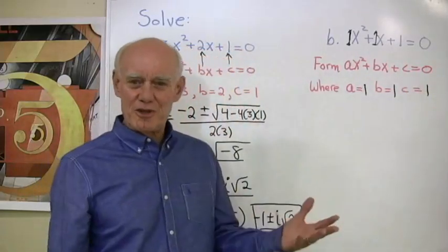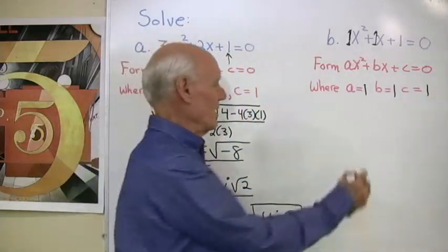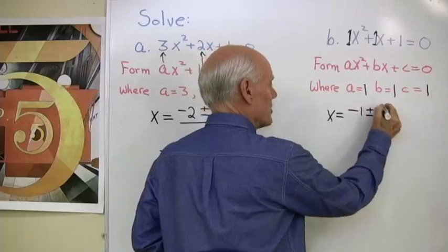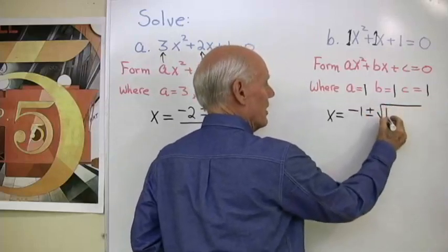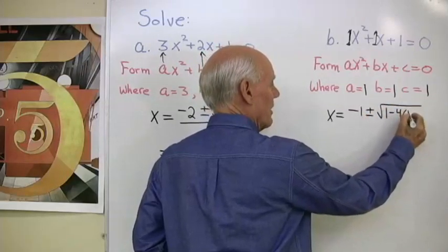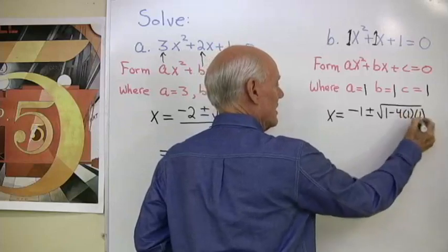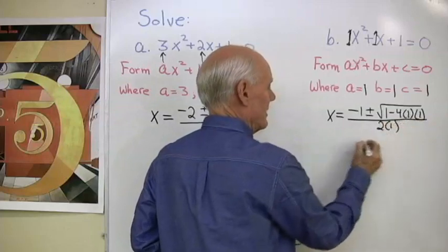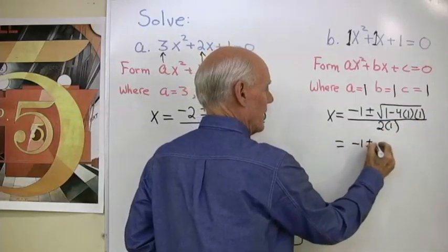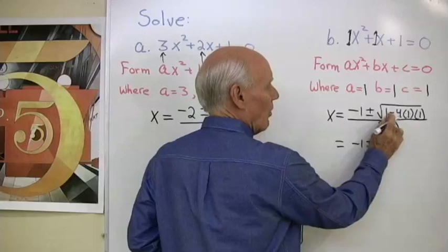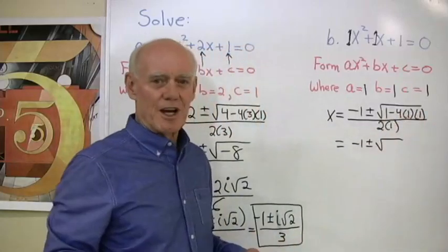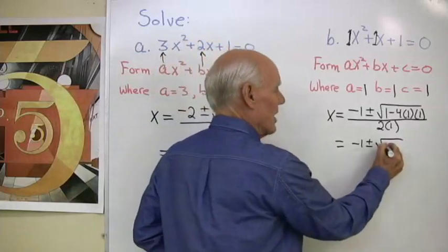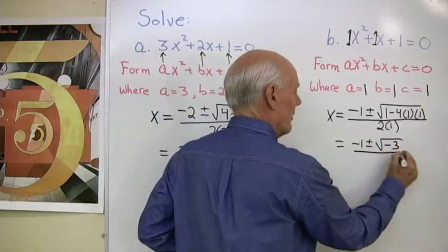So I'll substitute those numbers into my quadratic formula. I'll have x is negative B plus or minus square root B squared minus 4 times A times C, all divided by 2 times A. Simplify, negative 1 plus or minus square root of 1 subtract 4 times 1 times 1 is going to be 4. So 1 subtract 4 will be negative 3, all divided by 2.